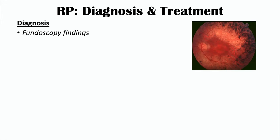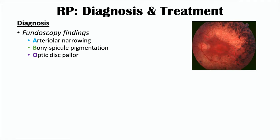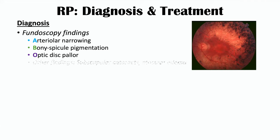Clinicians diagnose this condition through ophthalmological examination. Fundoscopy findings — looking at the fundus, including the retina and macula — are important. There are three key fundoscopic findings: arteriolar narrowing, where the arteries in the retina appear narrowed; bony spicule pigmentation, which can be seen deposited in perivascular areas; and optic disc pallor, where the optic disc appears more pale than it should. These are three important findings for making the diagnosis of retinitis pigmentosa.